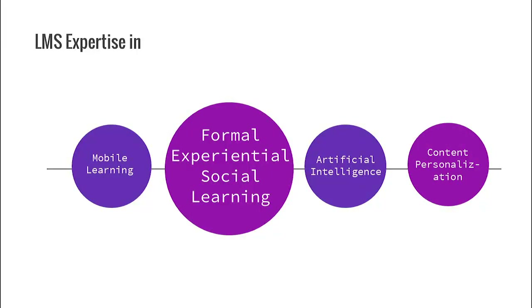Everything becomes digital, hence it saves a lot of money on buying textbooks, copies, or books. A formal learning management system helps to streamline the learning pattern, which in turn saves time for the instructor so they can focus more on individual progress. As things become digital, learning becomes more interesting with video tutorials, clips, gamification, etc. Easy and effective management is possible with LMS, and information accessibility becomes quick and accurate.